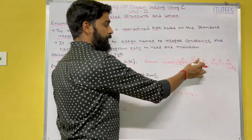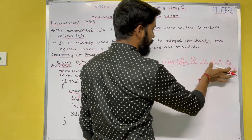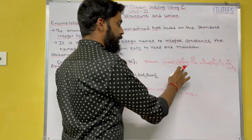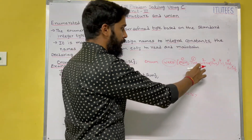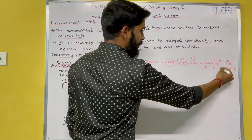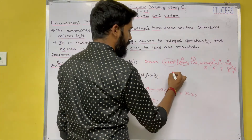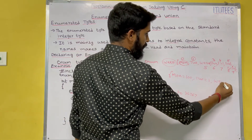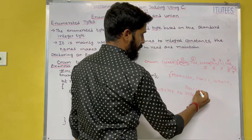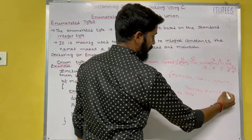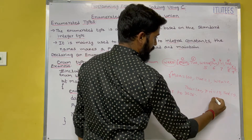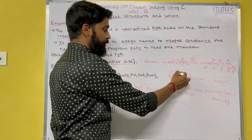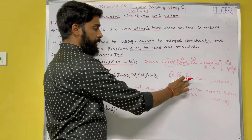You can also change the integer constants. For example, if you set Wednesday equals to 5, then Monday is 0, Tuesday is 1, Wednesday is 5, Thursday is 6, Friday is 7, Saturday is 8, Sunday is 9. You can also assign completely custom values — for example Monday equals 100, Tuesday equals 1, Wednesday equals 2, Thursday equals 120, Friday equals 15, Saturday equals 5, Sunday equals 8. These are the custom integers assigned to each name.